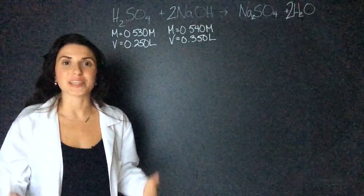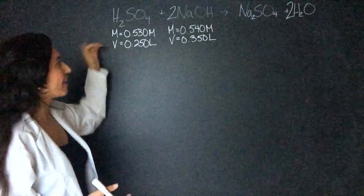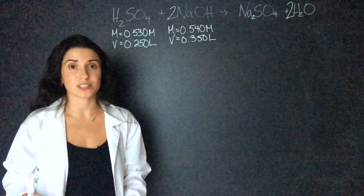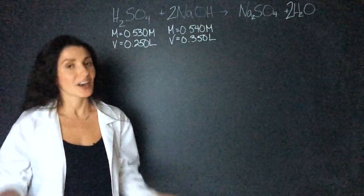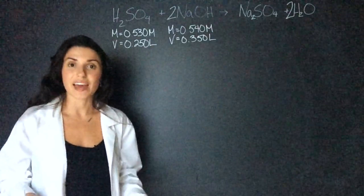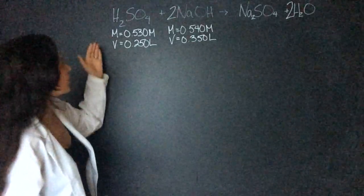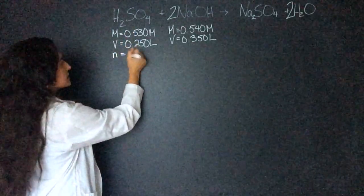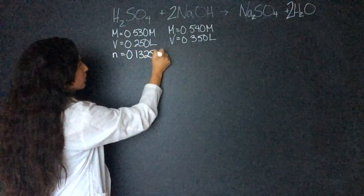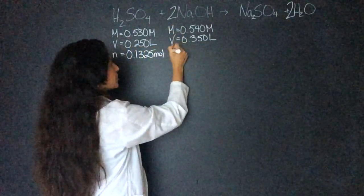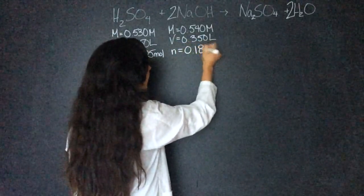So now what I do is I write out the information that they gave us in the question. They gave us the molarity and the volume of each of these solutions. So we can use our molarity equation to calculate the moles. The moles are going to equal molarity times volume. When I multiply these together I get 0.1325 moles and when I multiply these I get 0.189 moles.